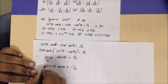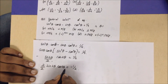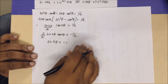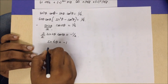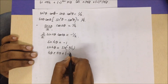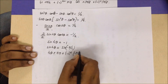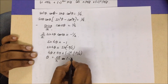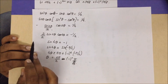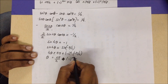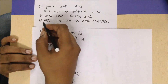Multiplying both sides by 2: −2sin2x·cos2x = 1, which means −sin4x = 1, so sin4x = −1. Therefore 4x = nπ + (−1)ⁿ·(−π/2), giving x = nπ/4 + (−1)ⁿ·(−π/8). Since no option shows a minus sign explicitly, we absorb the negative: the answer corresponds to option C.